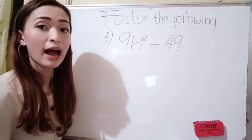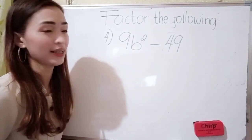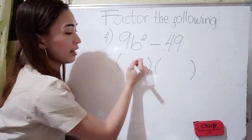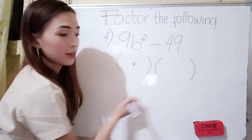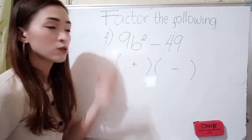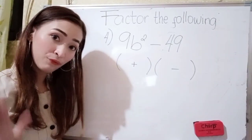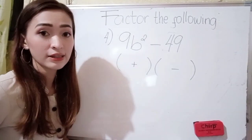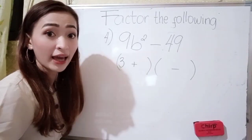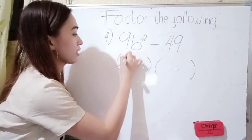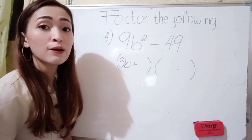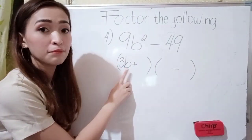For number 4, we have 9b squared minus 49. Again, write the grouping symbol. In our left-hand side we have the positive sign, and in our right-hand side we have the negative sign. What is the square root of 9? Think of a number that, if we multiply it by itself, the answer is 9. That is 3, because 3 times 3 is 9. We have b here, and for the exponent, divide it by 2. So 2 divided by 2 is 1, so we don't need to write 1 — we just have b.